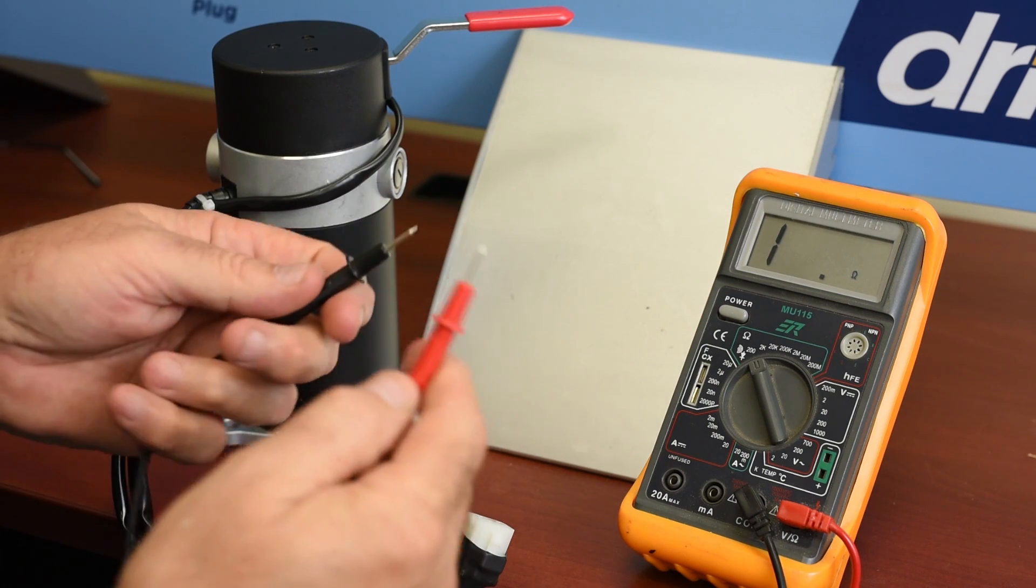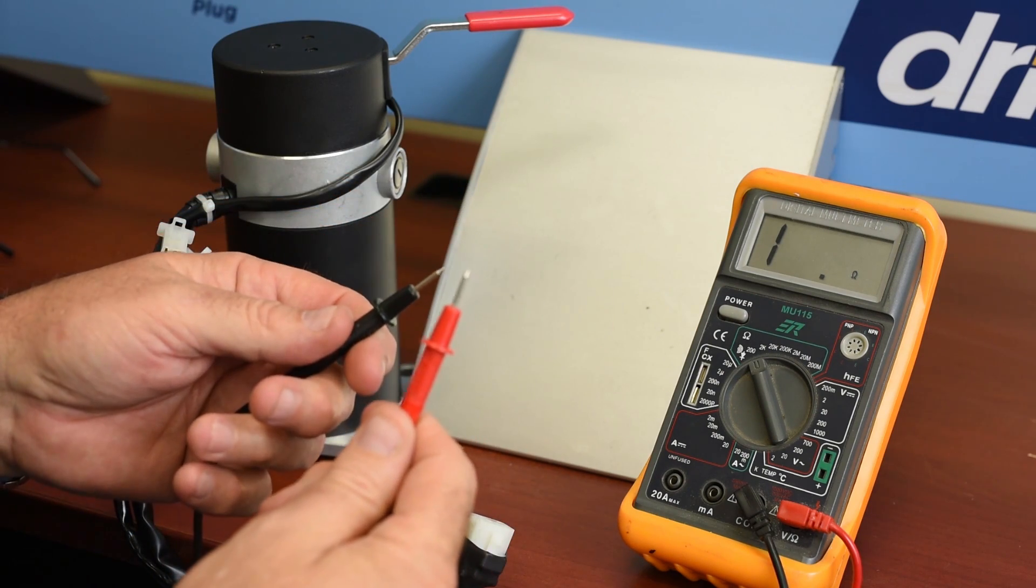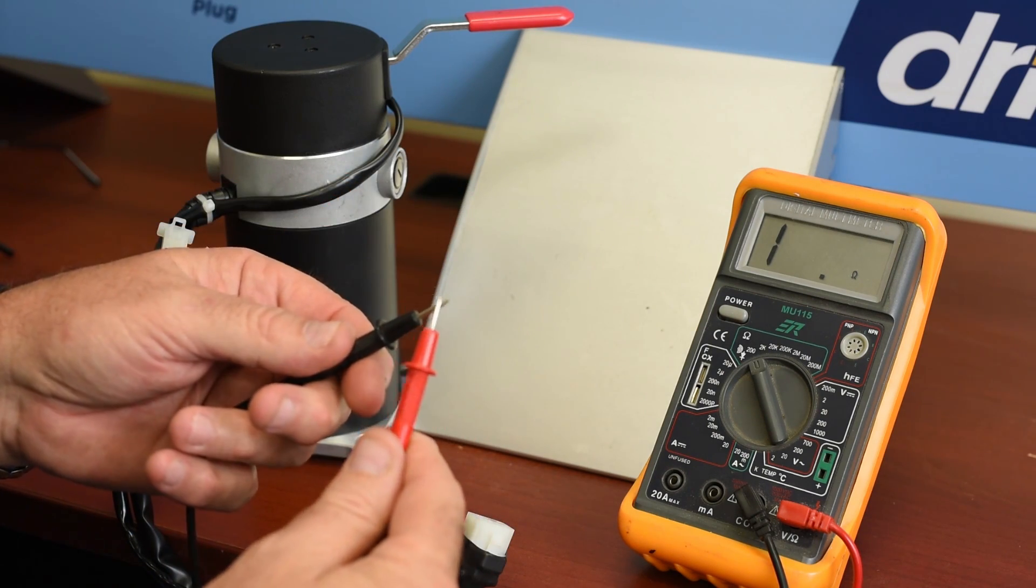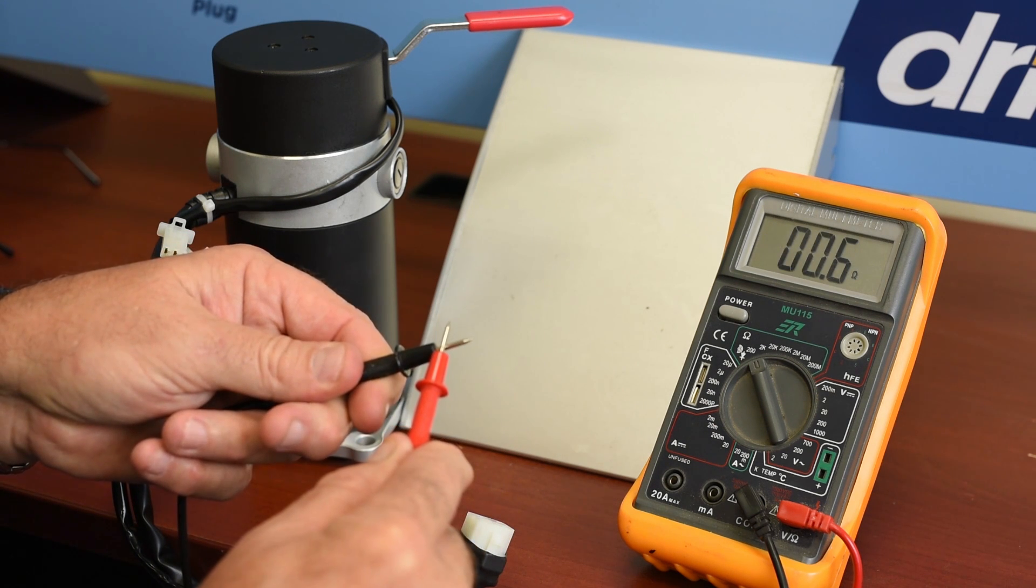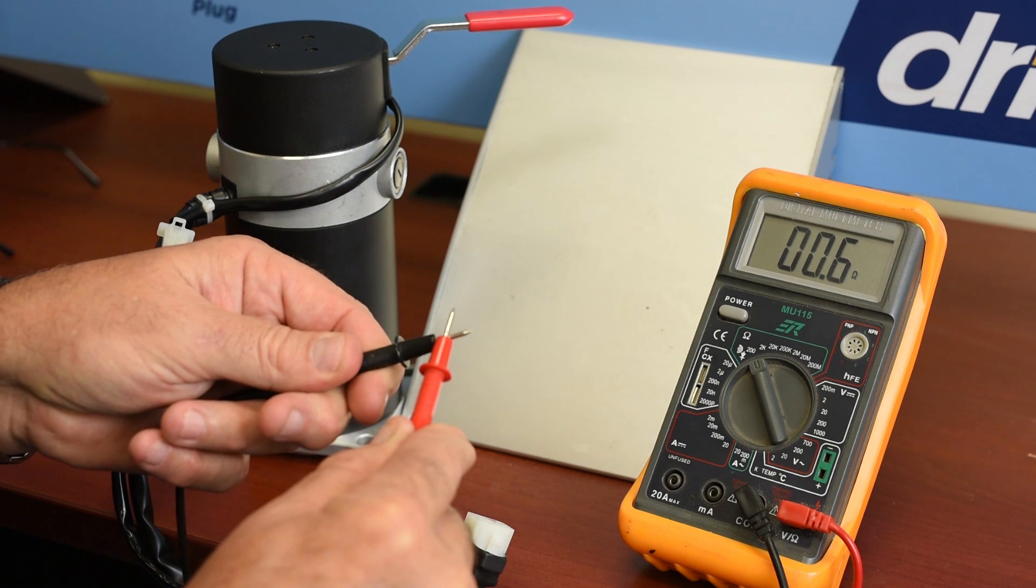Next we test to make sure our scale is working and our test leads are all hooked up properly. We touch the leads together and we should come down very close to zero.